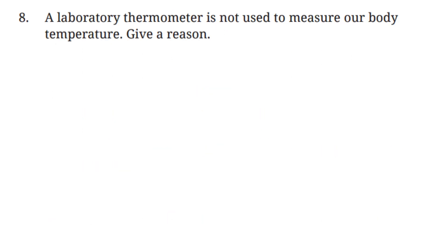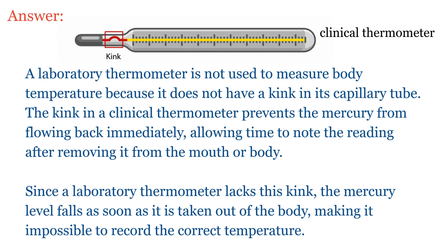Question 8: A laboratory thermometer is not used to measure body temperature — give a reason. A laboratory thermometer does not have a kink in its capillary tube. The kink in a clinical thermometer prevents mercury from flowing back immediately, allowing time to note the reading after removing it from the mouth. Since a laboratory thermometer lacks this kink, the mercury level falls as soon as it is taken out, making it impossible to record the correct temperature.